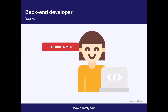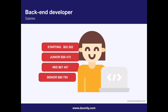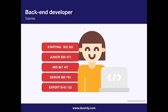Now let's check the salaries. According to CareerExplorer.com, the average salary in the United States for a starting backend developer is about $52,282 per year. When you become a junior programmer you can earn about $56,473 per year — so the difference is not that big. As a mid-level developer you can get about $67,467 per year. When you gain more experience and become a senior developer, you can earn about $90,493 per year — and here the rise is bigger.